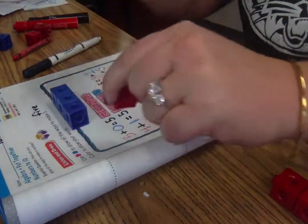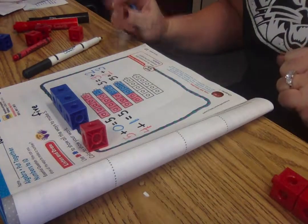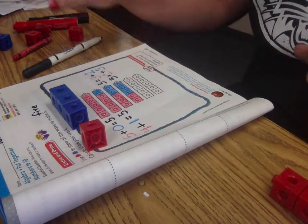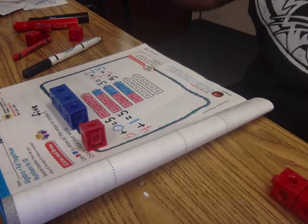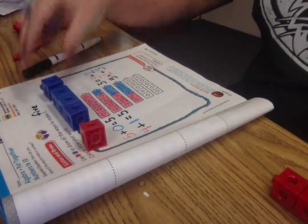Okay. So I have three blue. But now I'm going to take a red away. One, two, three, four. Five. I need, how many more do I need? One. One more blue.